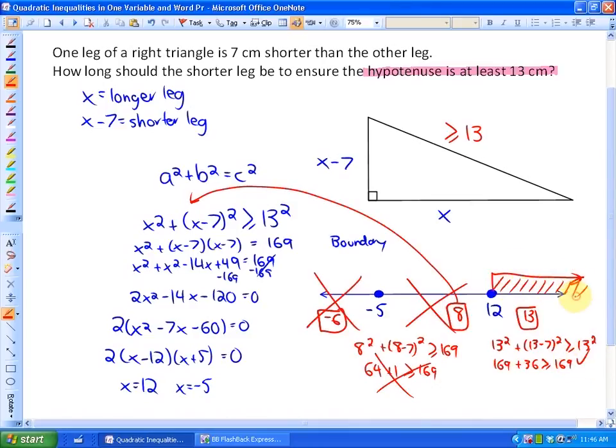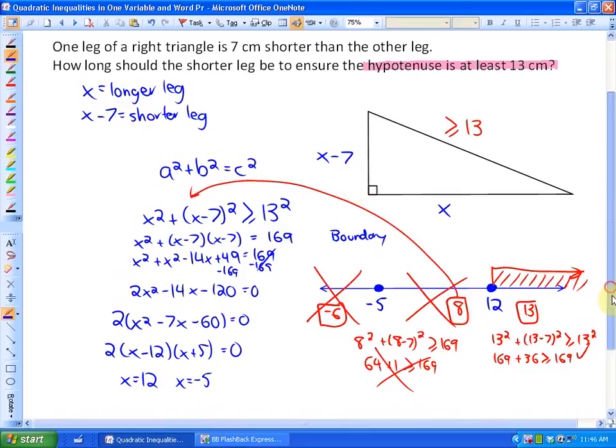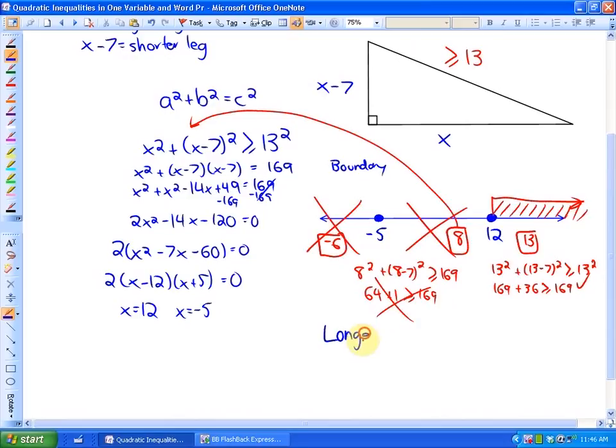We haven't answered the context of the question. The question says, how long should the shorter leg be to ensure the hypotenuse is at least 13 centimeters? These are the values of x. The longer leg should be 12 or longer, so the longer leg has to be x is greater than or equal to 12.